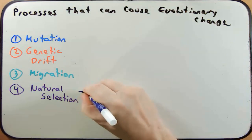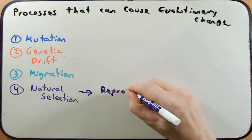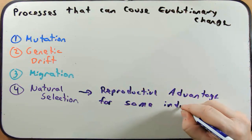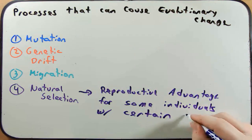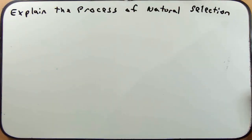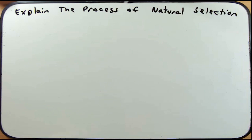The fourth process is natural selection — we just spent a lot of time talking about it. This is when there is a reproductive advantage for some individuals with certain traits. Now let's talk about the process of natural selection. Darwin came up with four postulates that provide a logical explanation of natural selection.